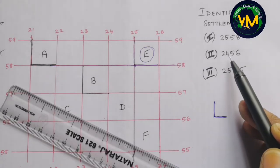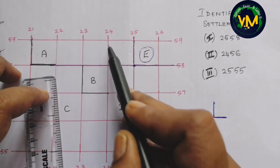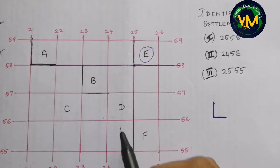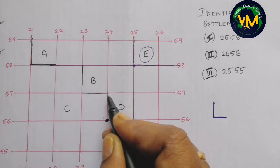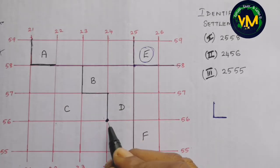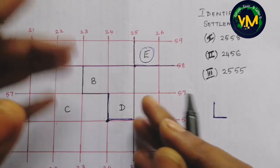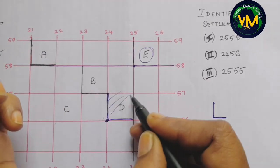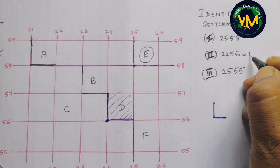Let's do one more — grid 2456. Line 24 is the easting and line 56 is the northing. The point of intersection of 24 and 56 gives us the grid square. Within this L, this grid is the answer — settlement D. For grid 2558 the answer was settlement E.